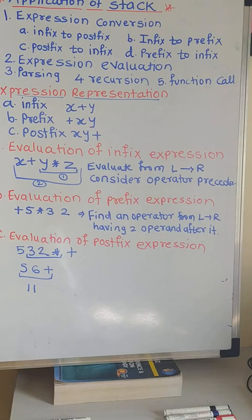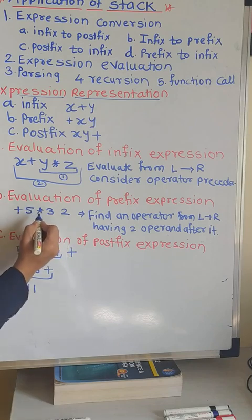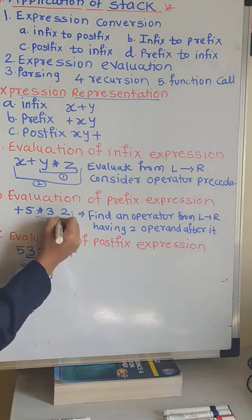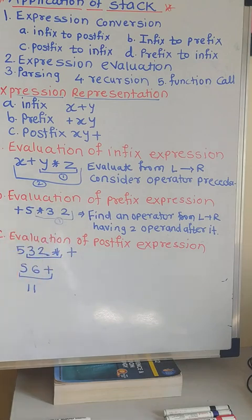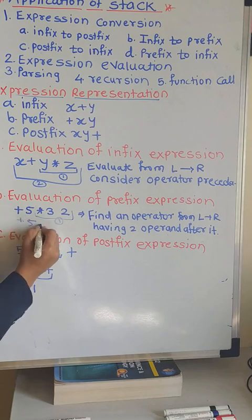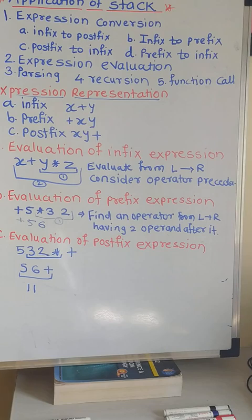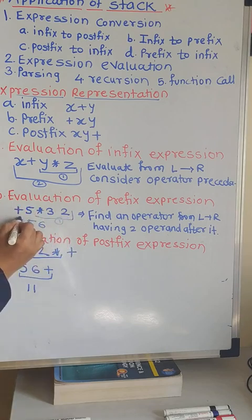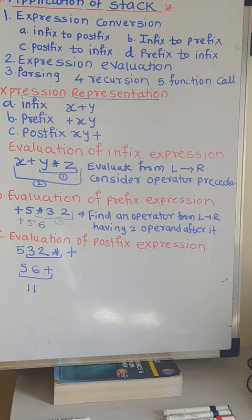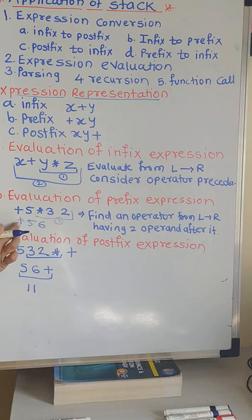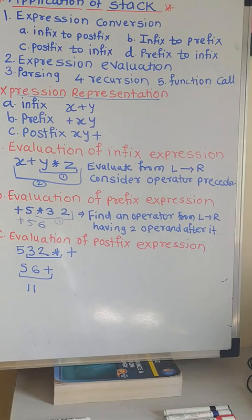So first, what we will do is multiplication of 3 and 2. Multiply these two first. So your expression will become plus 5 and 6, because 3 into 2 is 6. So, plus 5, 6. Then, again search for the operator, and after plus there is 5 and 6, so apply plus on 5 and 6. So you will get the answer 11.